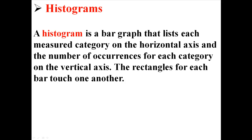We're going to construct histograms. A histogram is a bar graph that lists each measured category on the horizontal axis and the number of occurrences for each category on the vertical axis. The rectangles for each bar touch one another.